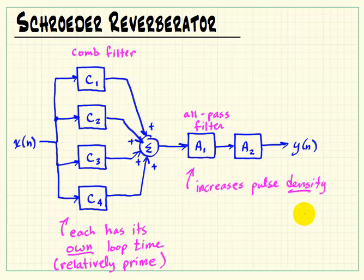An all-pass filter turns out to have an interesting impulse response, somewhat like the comb filter, and this is used to really fatten up the pulse density.